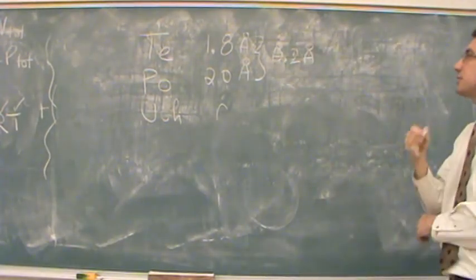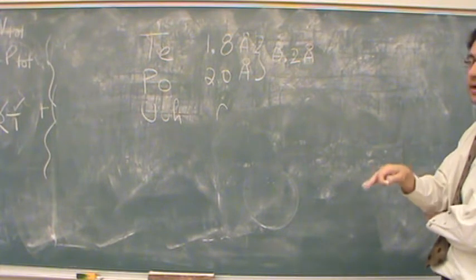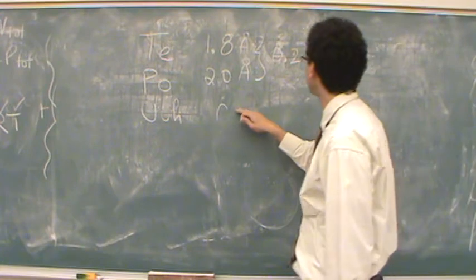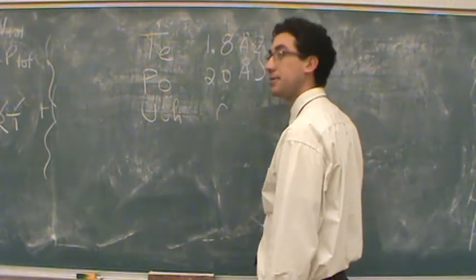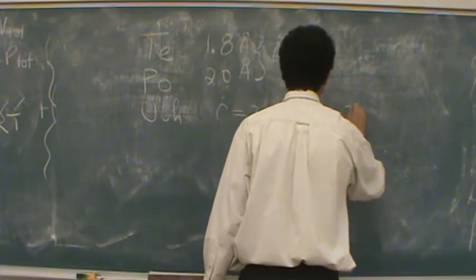So that's approximately the amount, as you go down from row to row, how much each one is increasing. So this would just be 2.0 plus 0.2, or 2.2.